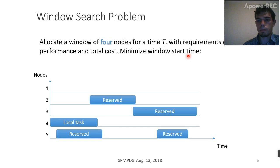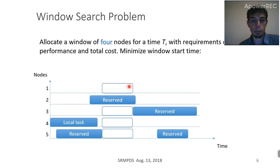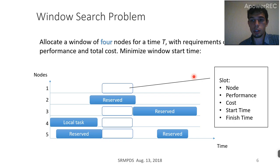As a simple example, having a set of nodes and their local schedules, let's try to allocate a window of four nodes which will minimize the start time. The time intervals during which we allocate a node we will call a slot. Each slot is described by the node it is allocated on, its performance, cost, and start and finish times. Here the window represents and consists of four slots.